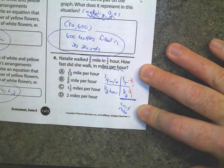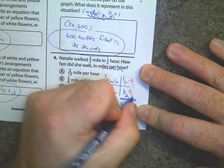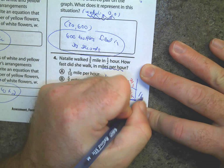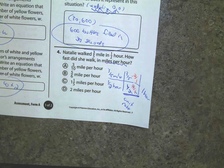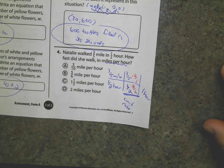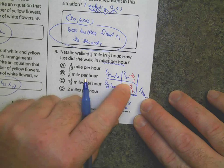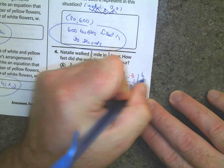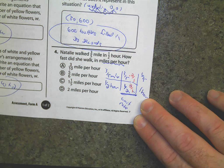Watch what happens here — I multiply by two over one on both sides. These cancel, giving me one hour on the bottom. Now I dust up my fractional math: three times two is six, five times one is five. I couldn't cancel out three, one, two, or five, so I get six-fifths miles per hour.